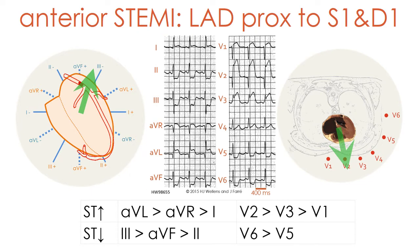This is an example of a STEMI due to an acute total occlusion of the LAD proximal to both the first septal and the first diagonal branches. As you can see, there is an ST segment elevation in leads V1 to V4 and also in lead AVL, lead AVR, and lead AVL. In addition, we observe an ST segment depression in all three inferior leads: 2, 3, and AVF.